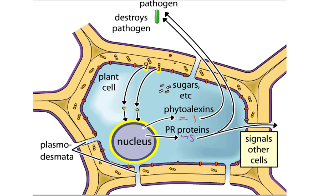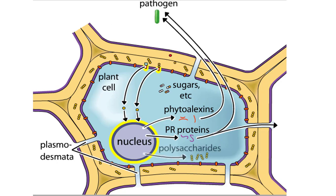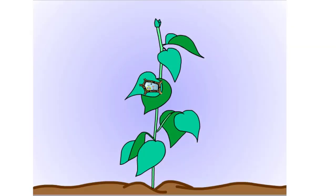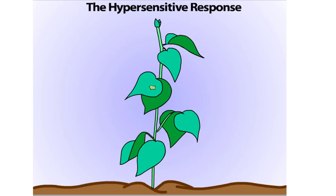When a plant encounters a pathogen, one of its first responses is to produce polysaccharides. These polysaccharides can strengthen cell walls, making it harder for the next pathogen to break through. They can also plug plasmodesmata, preventing certain pathogens, such as viruses, from migrating to neighboring cells.